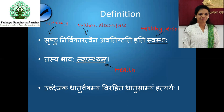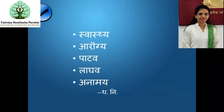There is also another definition for Swastha: utvejaka dhatu vaishamya virahita dhatu samyam iti atha - Swastha can also be defined as dhatu samyam avastha, devoid of any udvejaka dhatu vaishamya which might derail the dhatu samyam avastha. The synonyms of Swasthya famously used in Shastra are: Swasthya, Arogya, Patava, Lagava, and Anamaya. If you come across any of these terminologies, go back to the meaning of Swastha - stability in pure self.